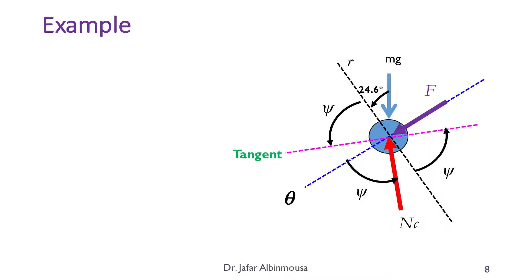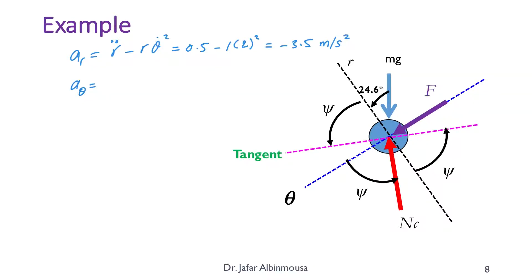Now we calculate the accelerations. The radial acceleration a_r = r_double_dot − r·(theta_dot)² = 0.5 − 1·(2²) = −3.5 m/s². The transverse acceleration a_theta = r·theta_double_dot + 2·r_dot·theta_dot = 1·(1) + 2·(1)·(2) = 5 m/s².